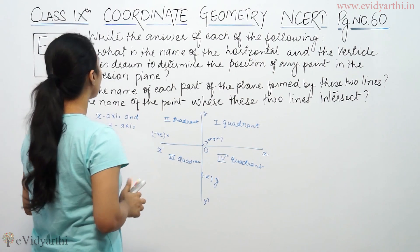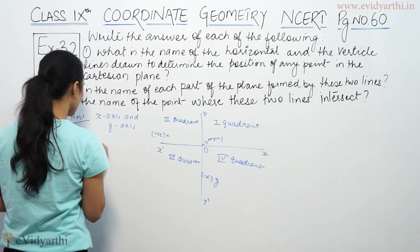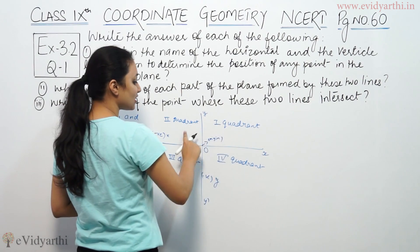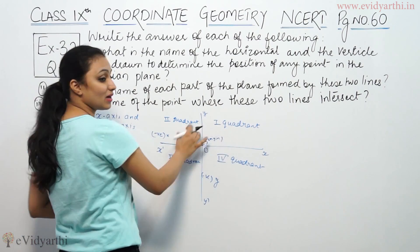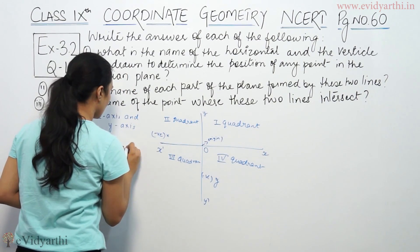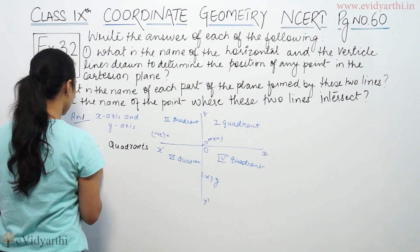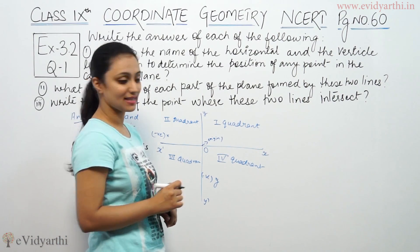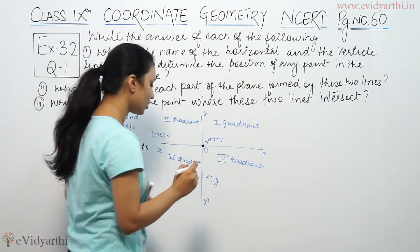Then we are asked: what is the name of each part of the plane? The plane is divided into regions by these two lines, forming four parts. These parts are called quadrants. And the point where the two lines intersect is called the origin.